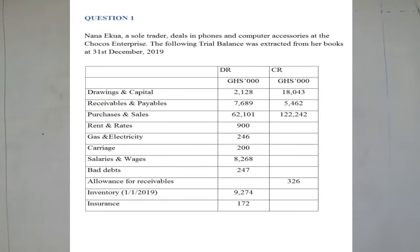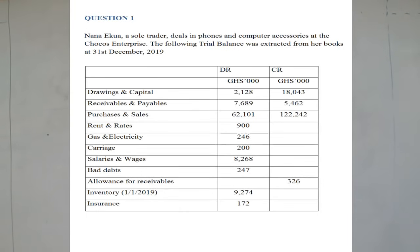Nanequia, a sole trader, deals in phones and computer accessories at the Chukus Enterprise. The following trial balance was extracted from her books at 31st December 2019. We have debit and credit columns with three currency signs and three zeros, meaning that whatever figure you have is in thousands or millions.